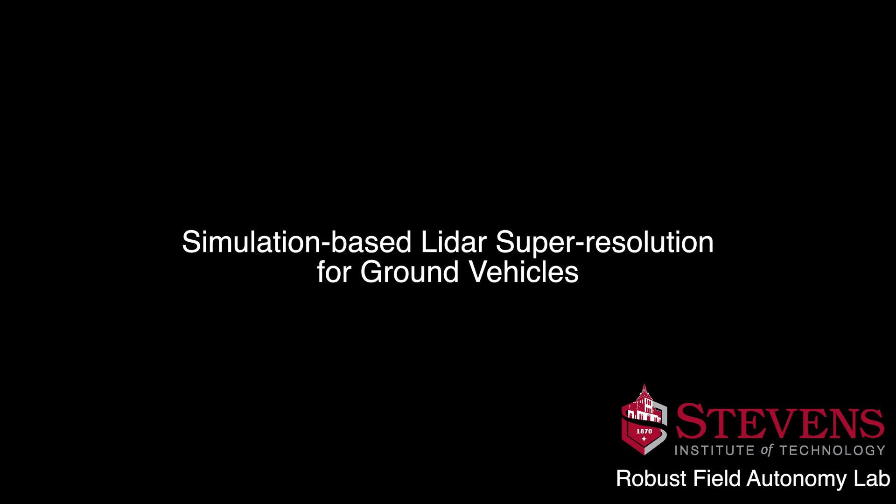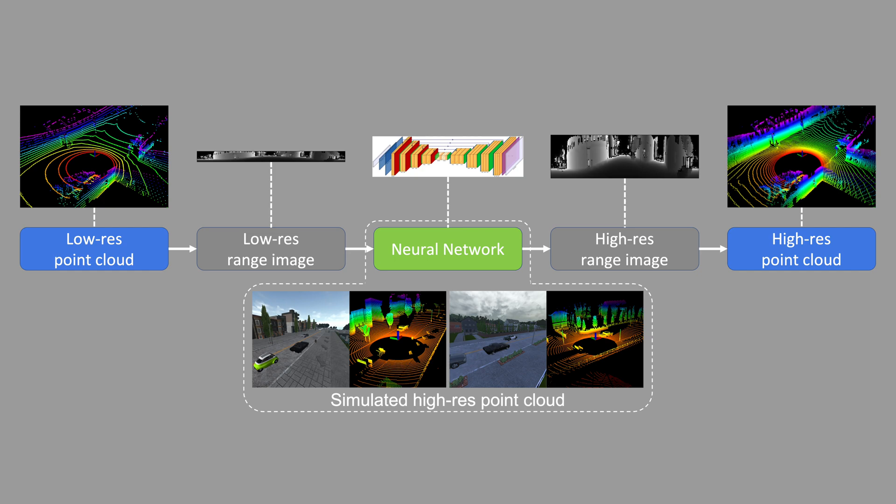In this paper, we propose a methodology for LiDAR super-resolution with ground vehicles driving on roadways. To increase the resolution of a point cloud from a sparse 3D LiDAR, we convert this problem from 3D Euclidean space into an image super-resolution problem in 2D image space, which is solved using a deep convolutional neural network.